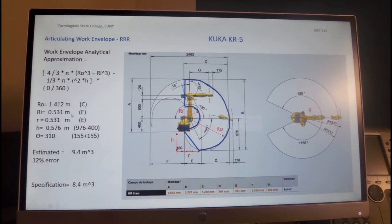Given that, plugging in the values, we can estimate the volume of the articulating robot over here, it's KUKA KR5, as 9.4 meters cubed. Now, the specification over here says 8.4 meters cubed, so we see that we have actually with this scheme generated an error of 12%.